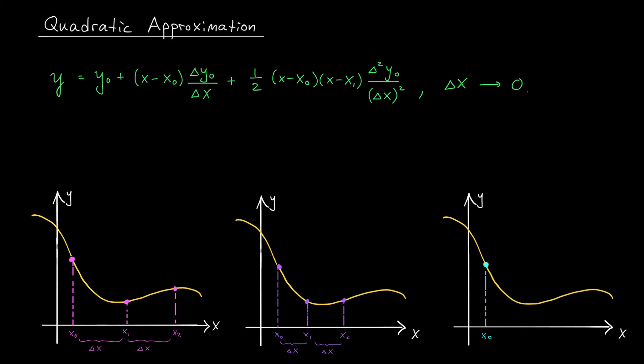which I've spaced out evenly along the x-axis. They're a width of Δx apart. A parabola through these points might look something like this. Now what's the equation of this parabola?